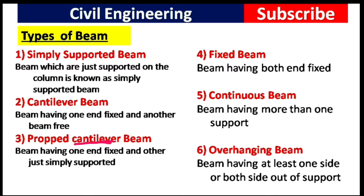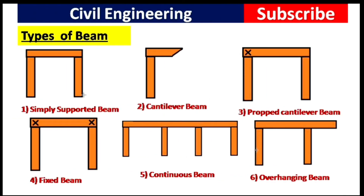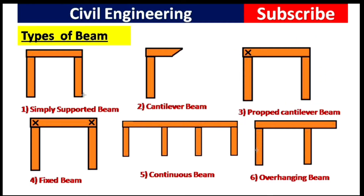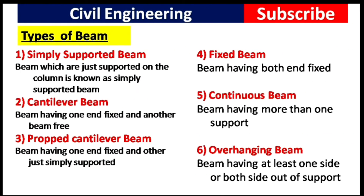The third type of beam is the propped cantilever beam. A propped cantilever beam has one end fixed and the other end simply supported on a column. As you can see in this picture, one end is fixed and the other end is simply supported, and this is known as a propped cantilever beam.